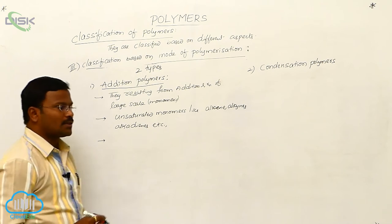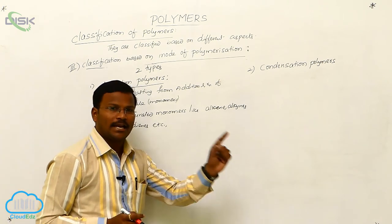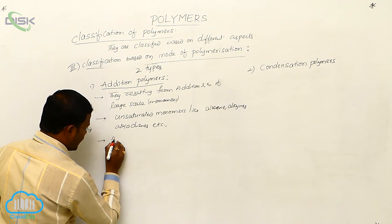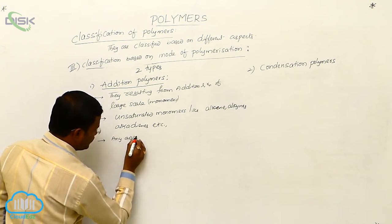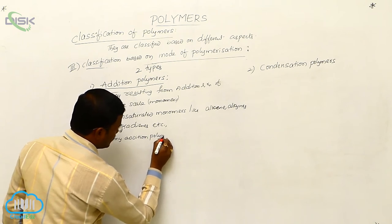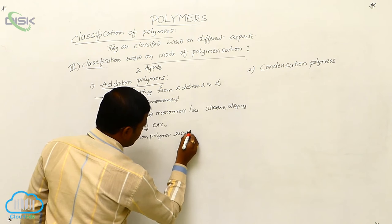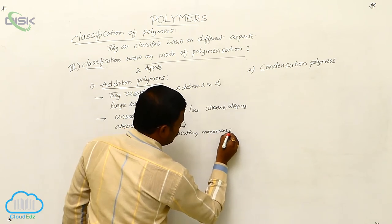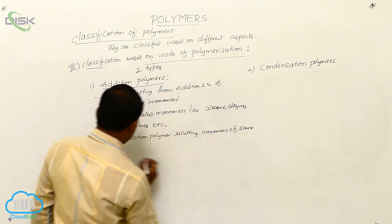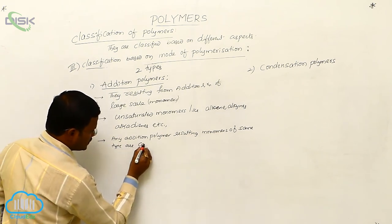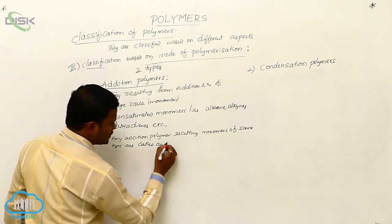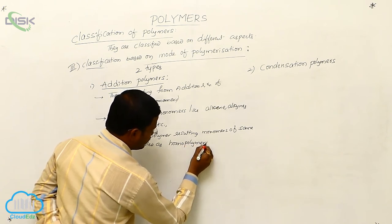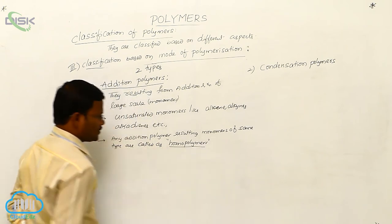Addition polymers are further of two types. If any addition polymer results from monomers of the same type, those monomers of the same type are called homopolymers. The monomer units present in such a polymer are similar in type.